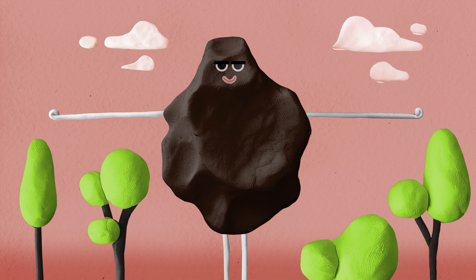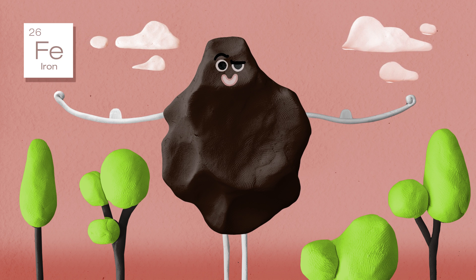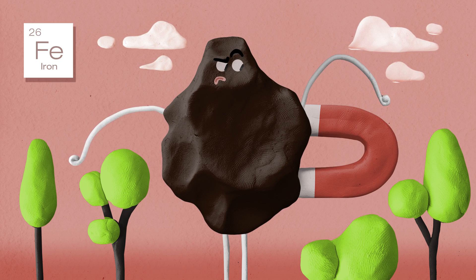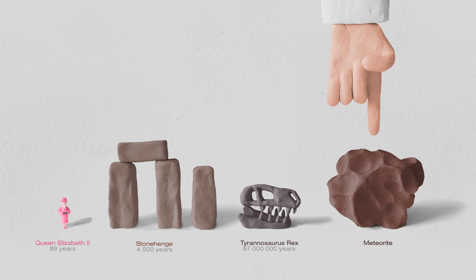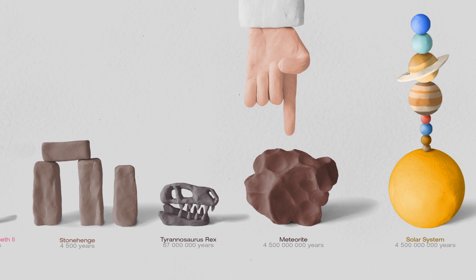Some meteorites contain iron which makes them very dense, dark and magnetic. They are the oldest thing you could ever touch, as they are the same age as the solar system.